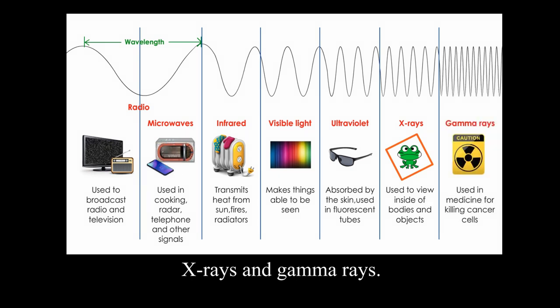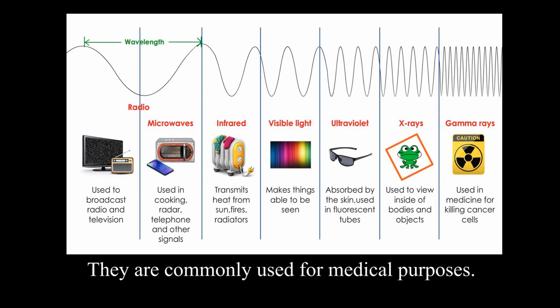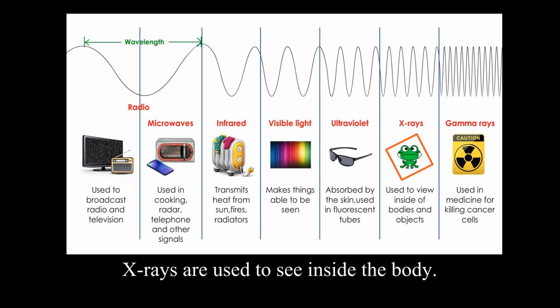X-ray and gamma rays. X-rays and gamma rays have a super short wavelength and super high frequency. They can penetrate things easily with strong power. They are commonly used for medical purposes. X-rays are used to see inside the body. Gamma rays can be used to kill cancer cells, but can be hazards to living organisms.